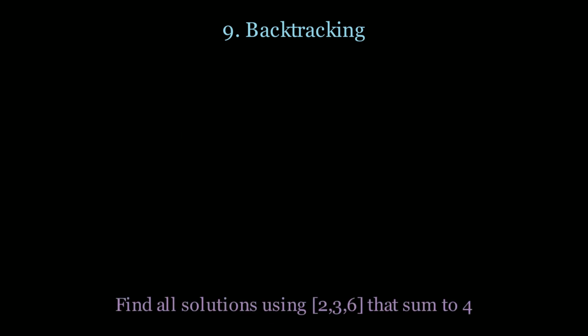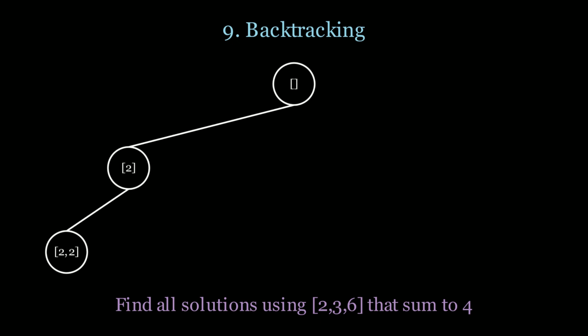We could also start pruning paths. If I have a problem that says find all solutions using 2, 3, and 6 that sum up to 4 — using an infinite amount of those numbers — let's start by taking 2 and another 2. In this case we sum up to 4, so we're green. However, if we take 2 and 3 we sum up to 5 which is greater than 4. Therefore we prune the branch and there's no need to go further.